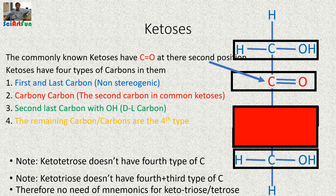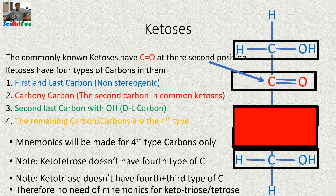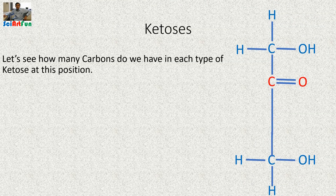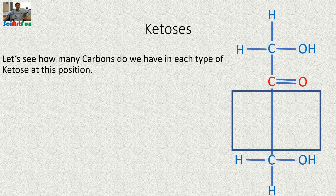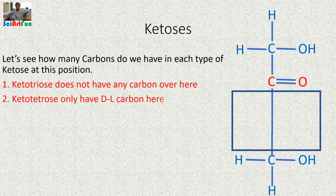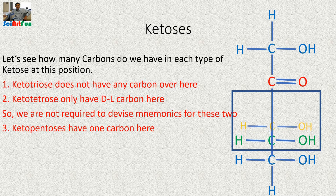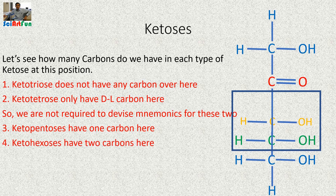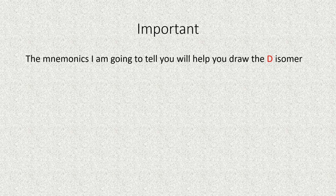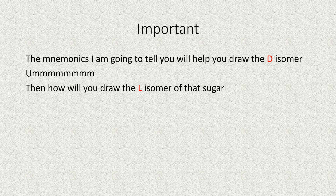Therefore, we do not need any mnemonics for ketotrioses or ketotetroses. Mnemonics will be made for the hydroxyl groups attached to the fourth type of carbon only. Ketopentoses have one carbon of the fourth kind, while ketohexoses have two carbons of the fourth type. The mnemonics I am going to tell you will help you draw the D isomer only. To draw the L isomer, it's very easy — just draw the mirror image of the D sugar.